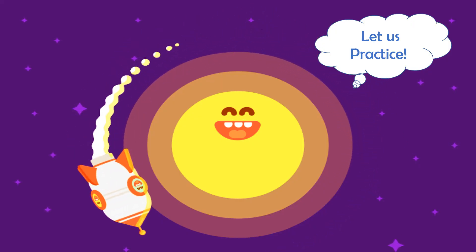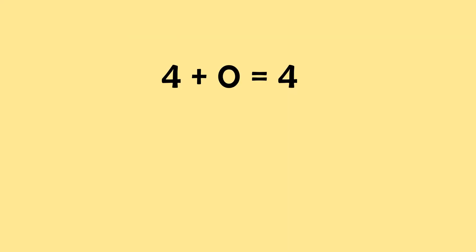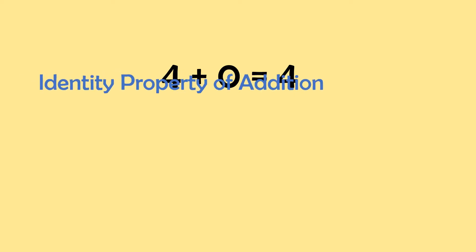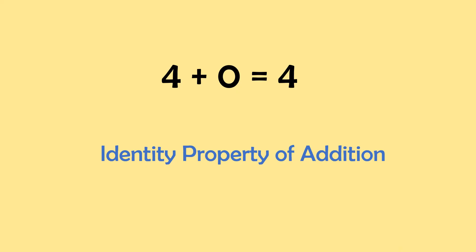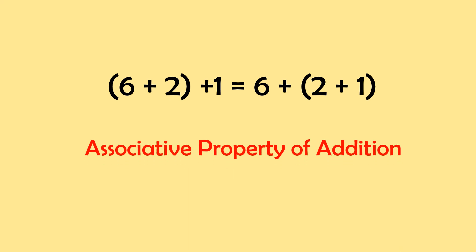Alright, so let us practice. What property of addition is shown in this problem? Here is the problem: 4 plus 0 is equal to 4. So, this is an associative property of addition. Very good. Next, identify what property of addition is shown in this problem. So, this is a commutative property of addition.